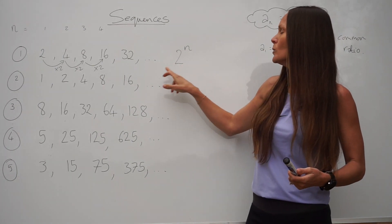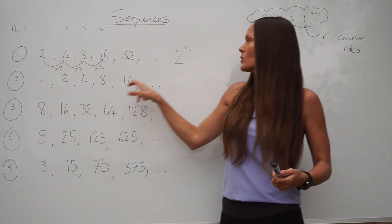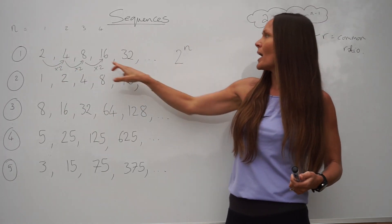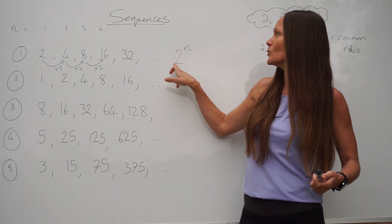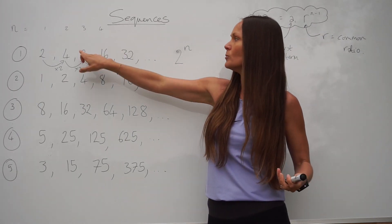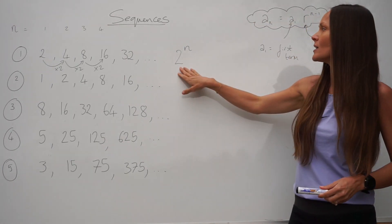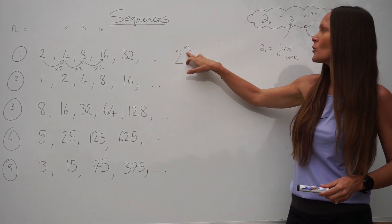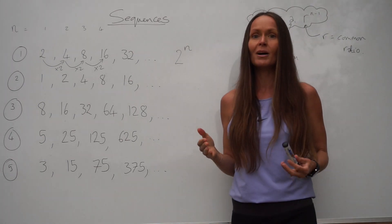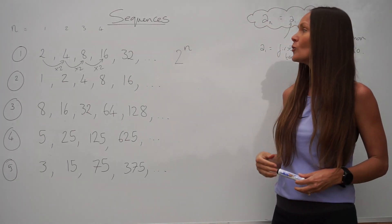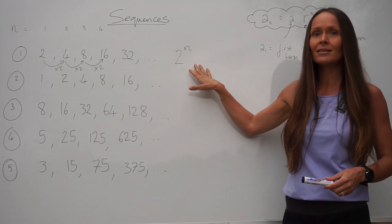So 2 to the power of 1 gives you 2. 2 to the power of 2 — so 2 squared — gives you 4. And 2 to the power of 3 — 2 cubed — gives you 8. So to generate the numbers in this sequence, you take the number 2 and you raise it to the power of the position of the number in the sequence. So because that's the rule for finding the numbers in the sequence, that is the nth term.